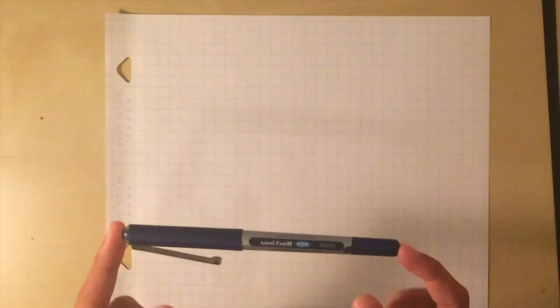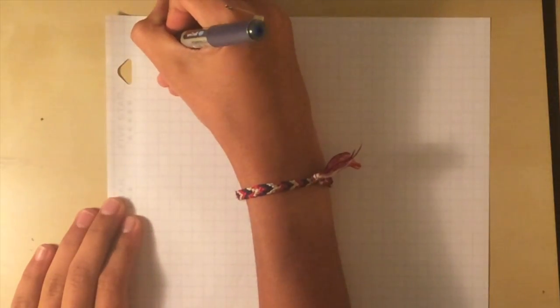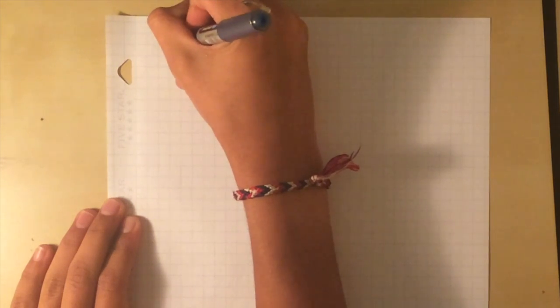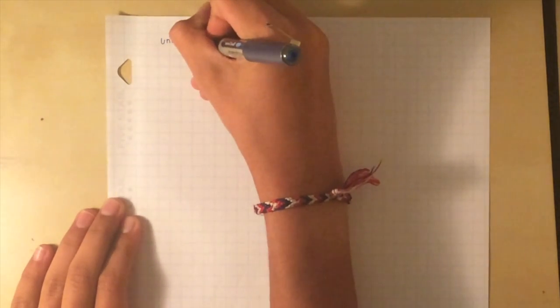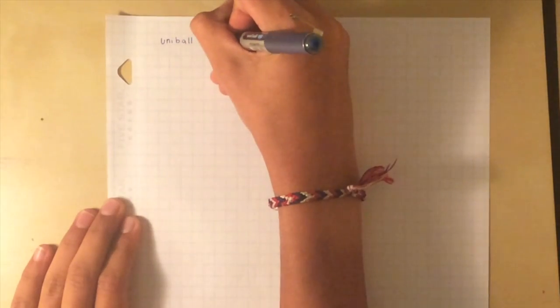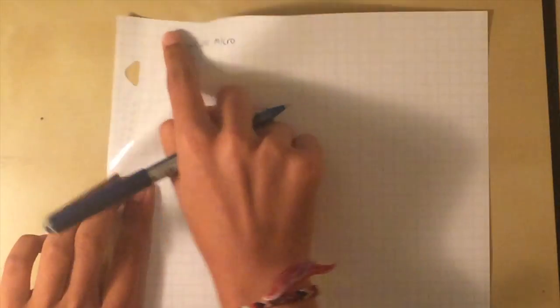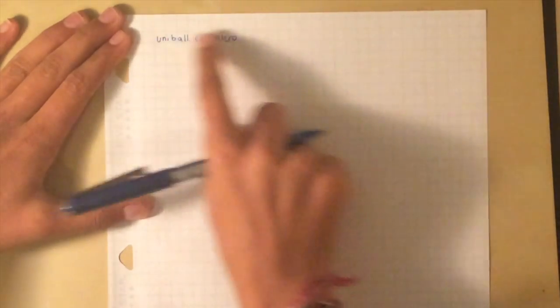So let's start with the Uniball Eye Micro. First we're just going to write a word, the product, and then we're going to do a smear test. As you can see it smears a little but it's not that much.